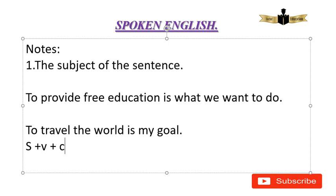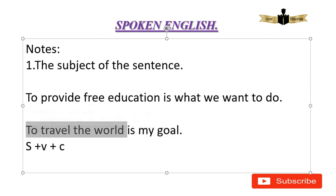So this is the verb, and this is the subject. How do you define the subject? 'To travel' is the infinitive verb; 'the world' is the object of the infinitive. So 'to travel the world' is the infinitive phrase. The infinitive phrase is one kind of noun phrase, and the noun phrase is what comes as the subject. Understand the sentence frame.